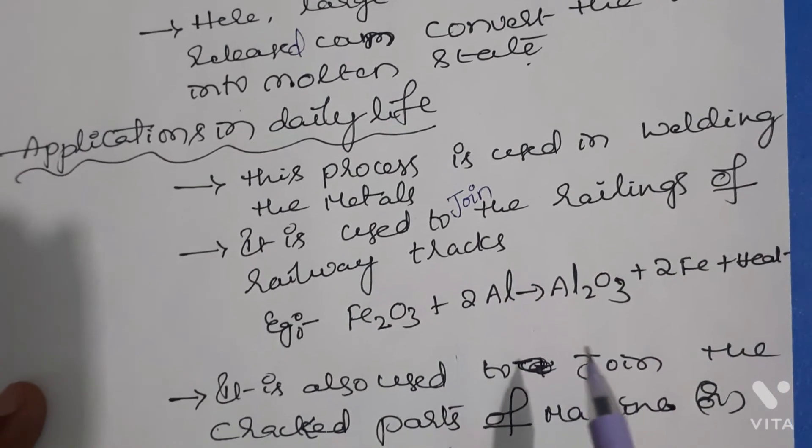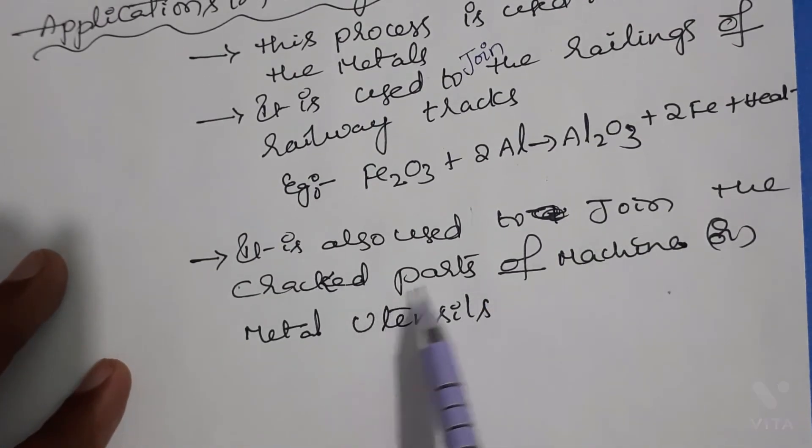It is also used to join the cracked parts of machines or metal utensils. These are some applications of thermite process in daily life students.